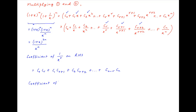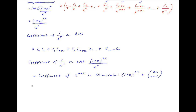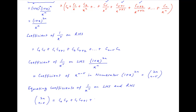Similarly, the coefficient of 1/x^r on the left-hand side — which is (1 + x)^(2n) / x^n — equals the coefficient of x^(n−r) in the numerator (1 + x)^(2n), and the value of this coefficient is 2n choose (n − r). Equating the coefficients of 1/x^r across both sides, we get 2n choose (n − r).